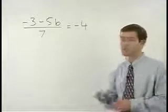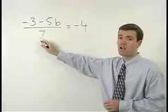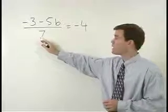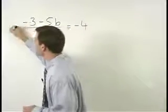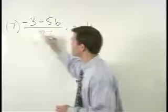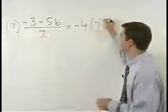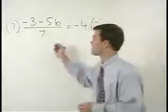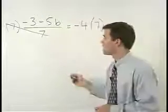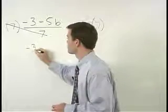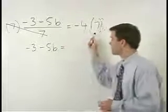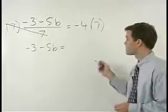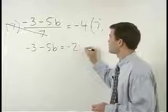So in the problem you see here, since the denominator of our fraction is 7, we get rid of the fraction by multiplying both sides of the equation by 7. On the left, our 7's cancel and we have negative 3 minus 5B. On the right, negative 4 times 7 is negative 28.